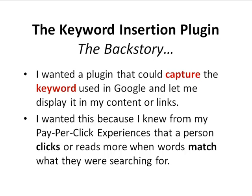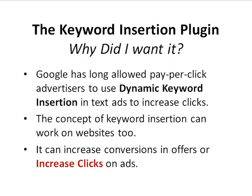The reason I wanted this is because I knew from my past experiences in pay-per-click marketing that when ad text matches or closely matches the keyword a person searches for, it gets clicked on more often. Google has long allowed a service within their pay-per-click program, Google AdWords, known as dynamic keyword insertion. It works by allowing advertisers to dynamically insert the actual keywords a visitor types into an ad instead of creating ads from scratch. Basically it takes the actual keyword, dynamically inserts it into the ad copy, and those ads get clicked on at a far higher ratio than other ads.